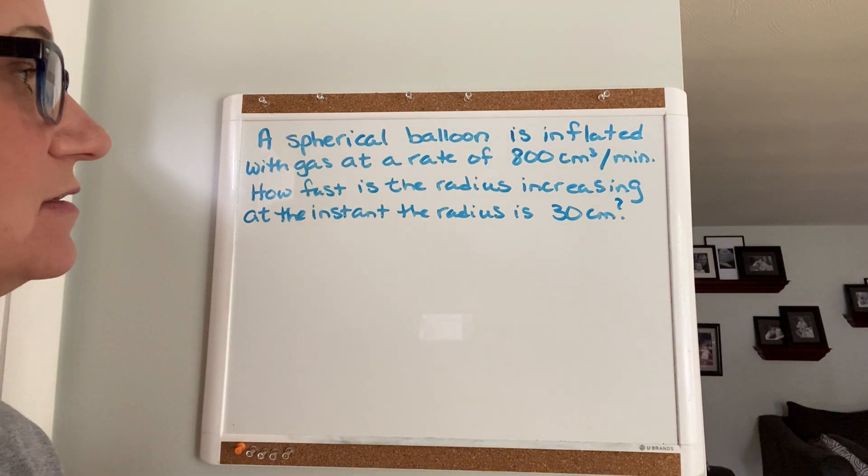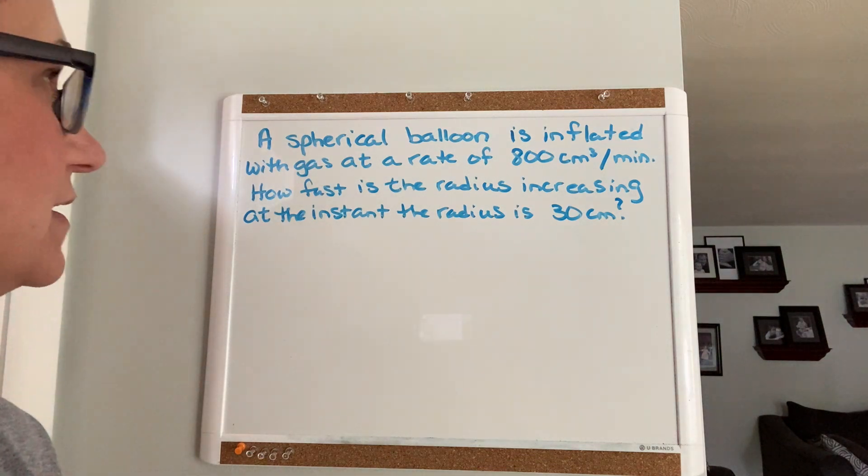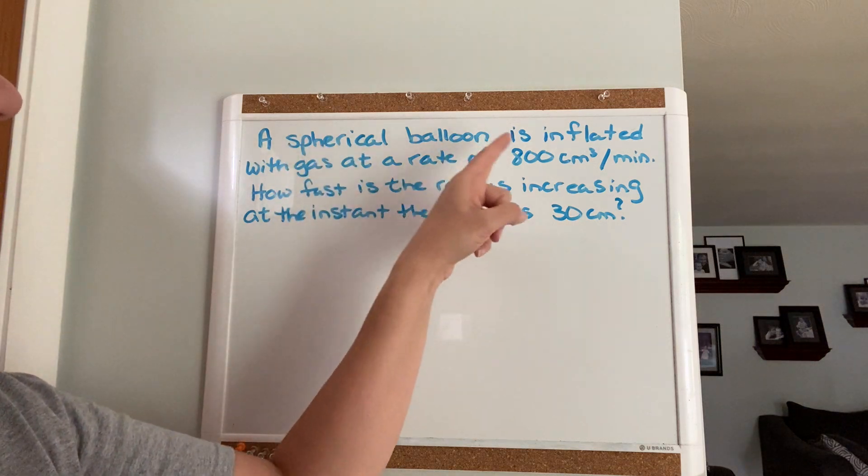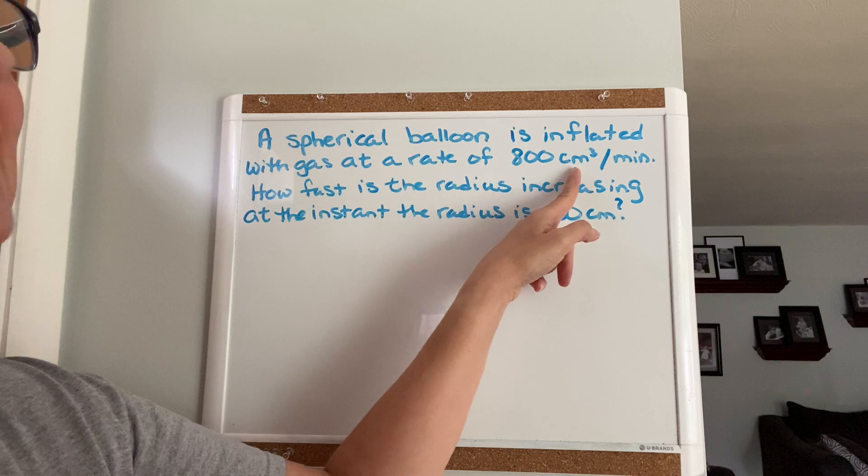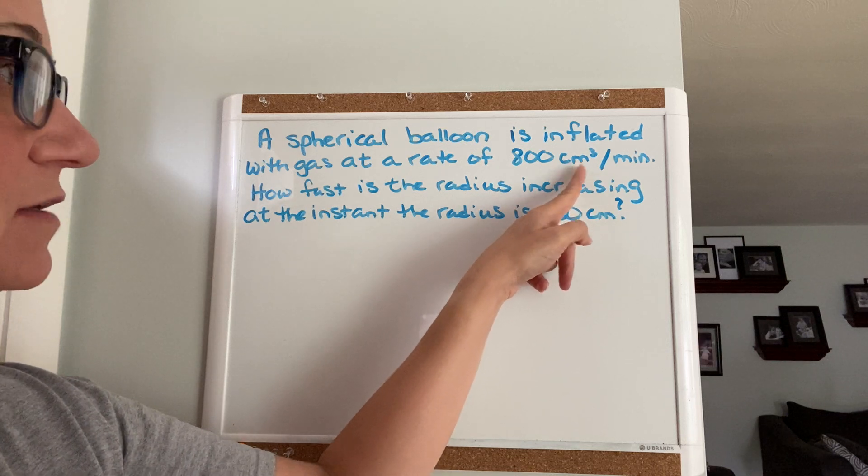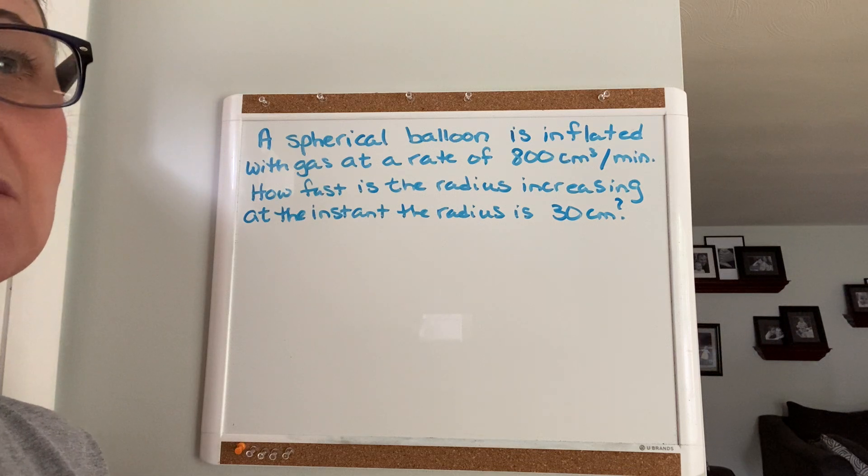Now you have to determine what formula is required here. It says a spherical balloon is being inflated at a rate of 800 cubic centimeters per minute, so this is your clue right here - cubic units is volume.